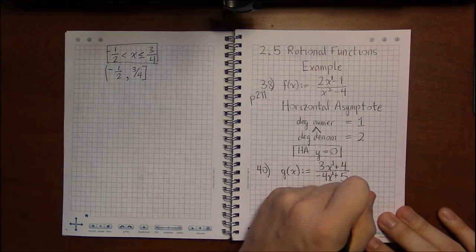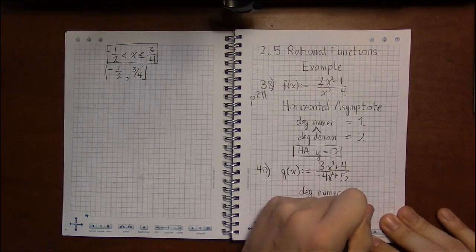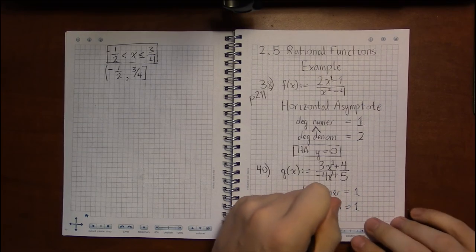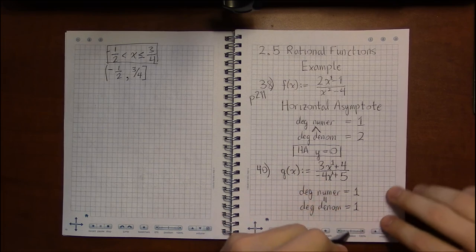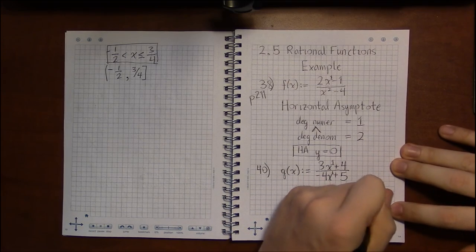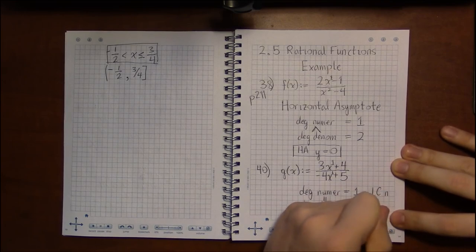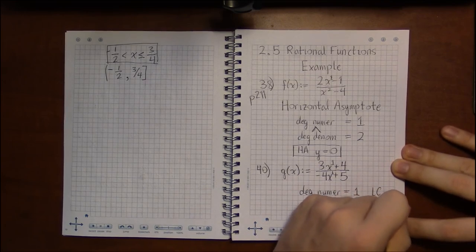So the degree of the numerator and the degree of the denominator are 1. And when they are equal, we need to know the leading coefficient of the numerator and the leading coefficient of the denominator.